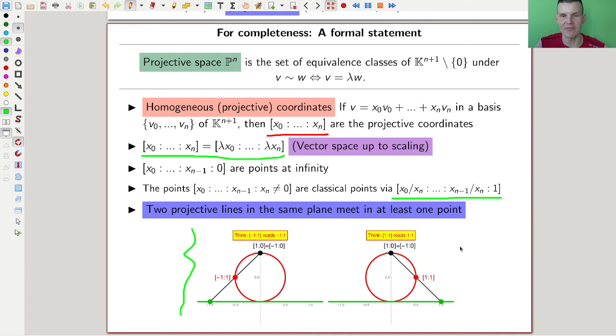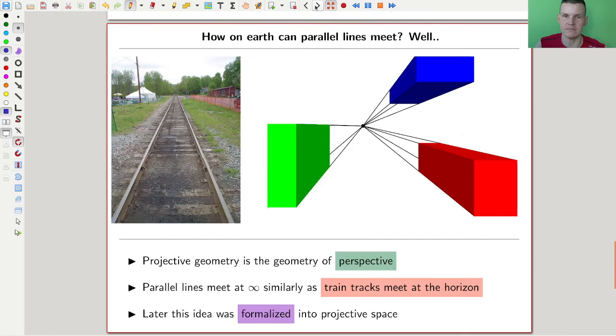And the only confusing part is, that projective space is kind of always one bigger than, one coordinate bigger than classical space, because there needs to be room for the point at infinity. That's why it counts from zero to n. In other words, the projective n space has a basis indexed by the same basis as affine n plus one space.